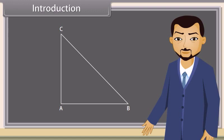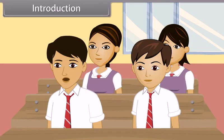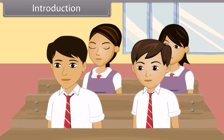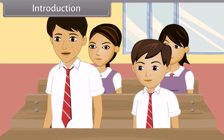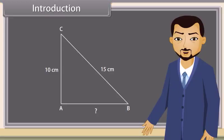Look at this triangle now. Which triangle is this? Right triangle. Correct. Now if one side of this triangle is 10 cm and the second side is 15 cm, then can you tell the length of the third side? Yes. We can find the length of the third side using Pythagoras theorem. So what is Pythagoras theorem? Today we will learn about Pythagoras theorem. Let's start.